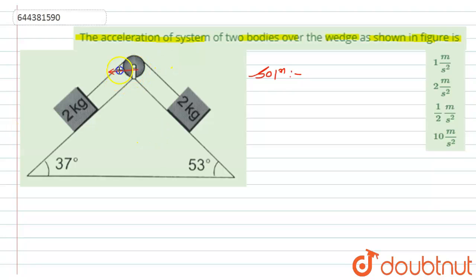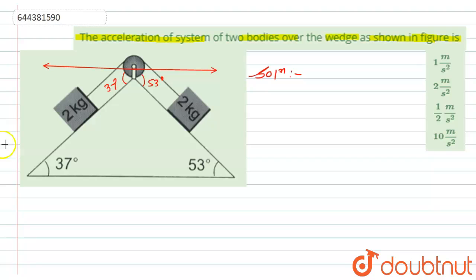According to this, if this angle is 37 degrees, then this angle will also be 37 degrees. And if this angle is 53 degrees, then this angle will also become 53 degrees. According to this, the force in this direction can be given by 2g sin(53°).